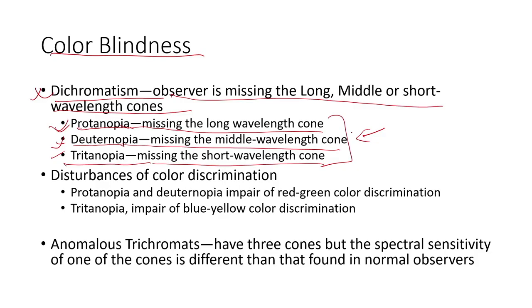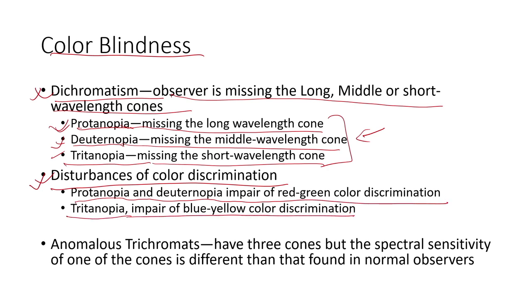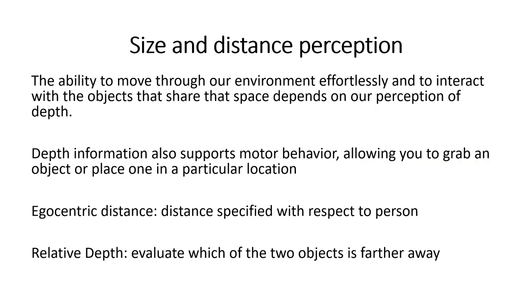Disturbances of color discrimination: protanopia and deuteranopia impair red-green color discrimination, whereas tritanopia impairs blue-yellow color discrimination. Anomalous trichromats have three cones but the spectral sensitivity of one of those cones differs from a normal observer, so one cone becomes more active and colors at that particular wavelength are perceived more strongly than others.